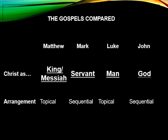John presents Christ as God, trying to show that Jesus was not just a good person, not just a servant, not just a king — he was and is God. Regarding arrangement, Matthew and Luke are topical, while Mark and John are chronological or sequential. Mark and John go through events in a more orderly way, telling what happens next in sequence.